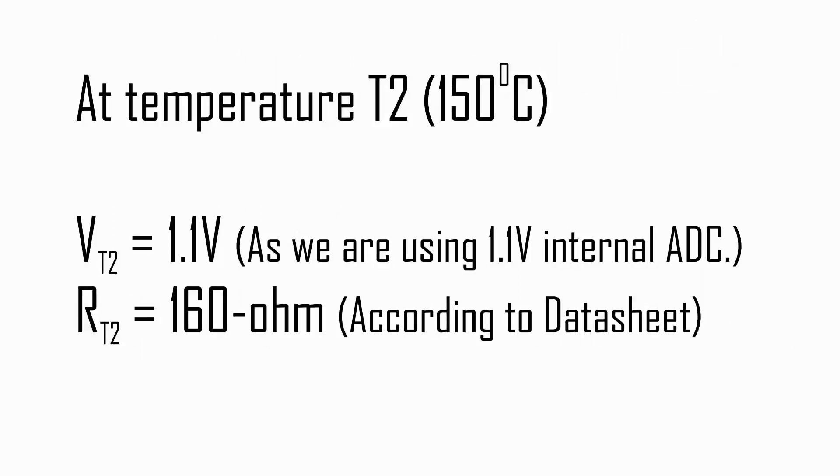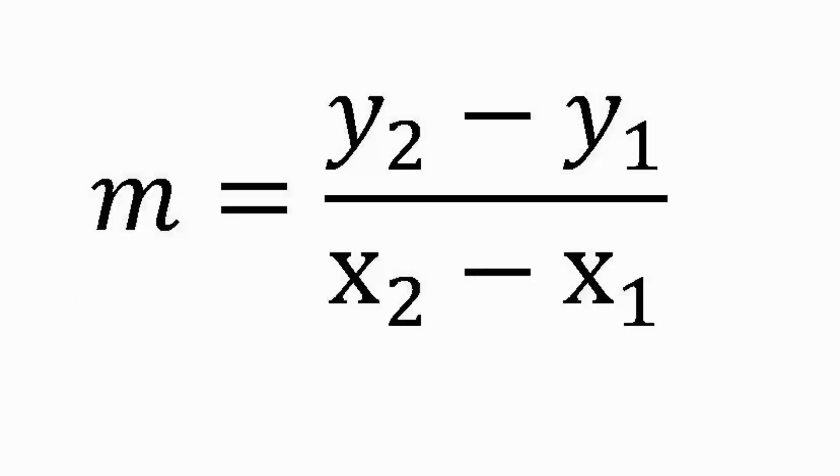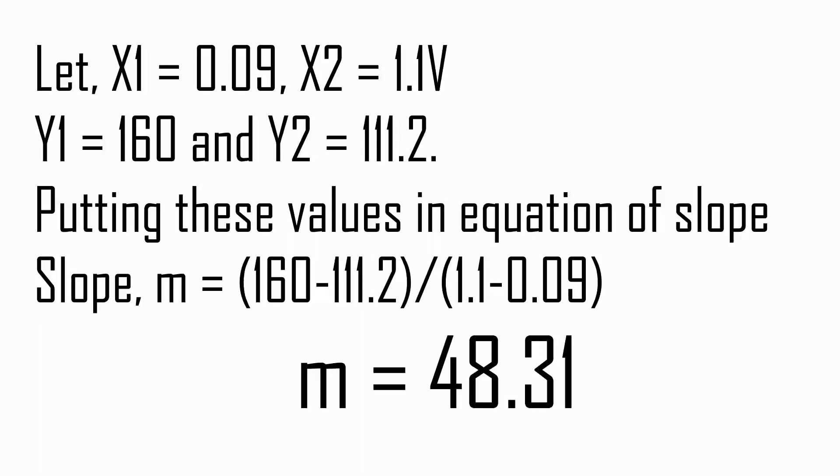Now by using the formula for slope, m equals y2 minus y1 over x2 minus x1, we can calculate the value of slope. If we take x-axis as voltage and y-axis as resistance, then x1 equals 0.09 voltage and x2 equals 1.1 volt. Similarly, y1 equals 111.2 ohm and y2 equals 160 ohm. If we put all these values in equation of slope, then we get 48.31, that is the value of slope or m equals 48.31.